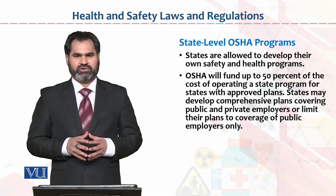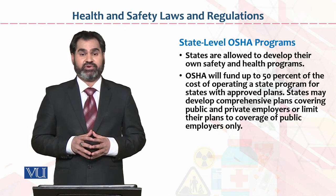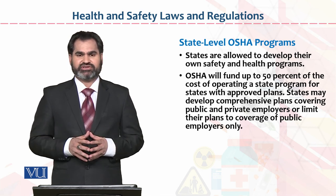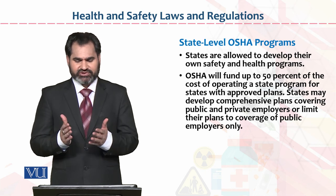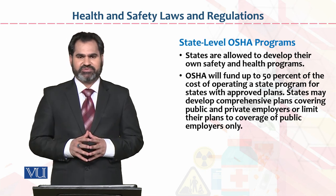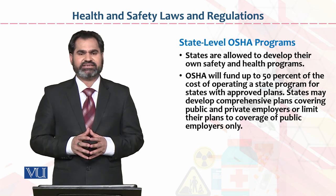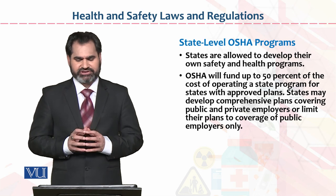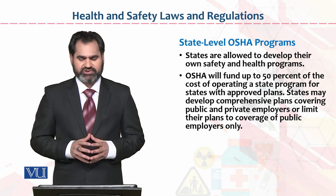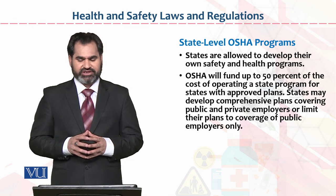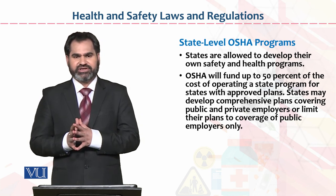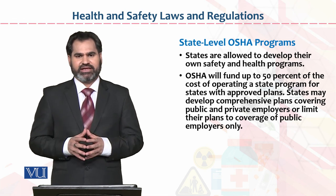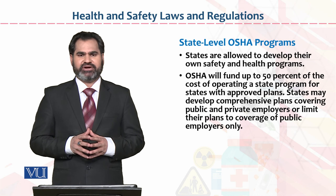States are allowed to develop their own safety and health programs. For example, Michigan state, California state — in the context of the United States of America, much of the data given refers to these states. The state itself also makes health and safety laws, and it is the responsibility of organizations to fulfill them. Occupational Safety and Health Association will fund up to 50% of the cost of operating state programs. If any organization follows the law and a problem arises, 50% of the cost will be borne by the state and 50% by the organization.